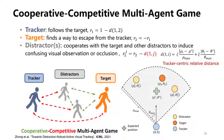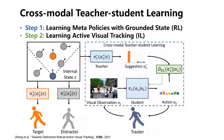To learn policies in this multi-agent game, we introduce cross-model teacher-student learning — a two-step strategy. At the first step, we train meta-policies using reinforcement learning in a self-play manner in a simplified environment, using grounded state — the spatial location of an agent without appearance — as input.